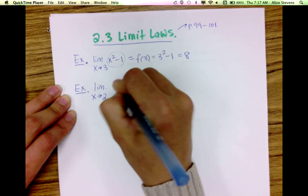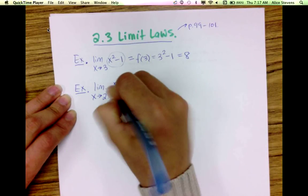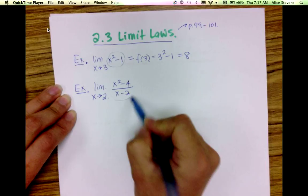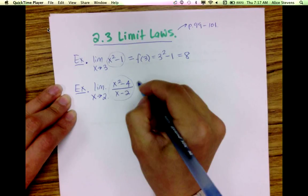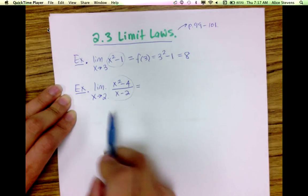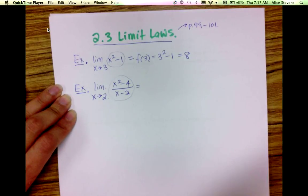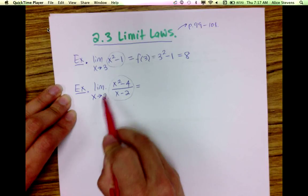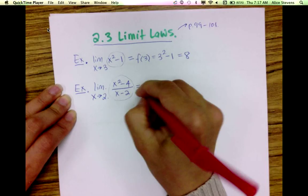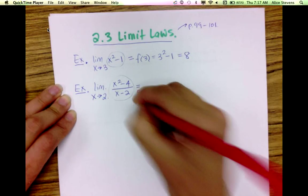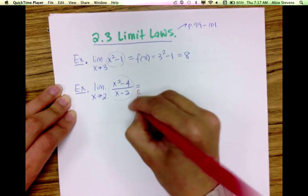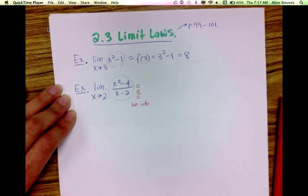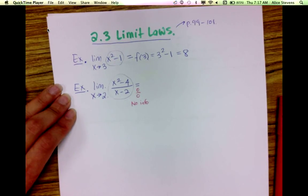Here's another function — this is a rational function. However, 2 is not in the domain of this function. If I try to substitute 2 directly into this function, I get 0 over 0, which is basically no information. That's what we call an indeterminate form.